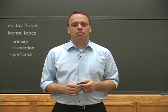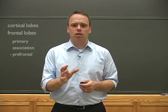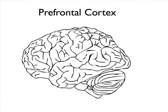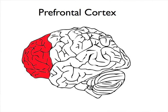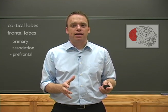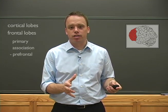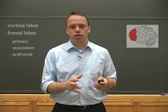Lying anterior to the motor association areas is another very important association area for the frontal lobe, called the prefrontal cortex. It includes deep reciprocal connections with everything from the brainstem, the cerebellum, subcortical structures, and other cortical areas. In fact, it's perhaps the most widely connected area of the brain. It's possible to further differentiate the prefrontal cortex into additional subdivisions; however, for our purposes, we'll continue to talk about the prefrontal cortex as one functional whole.